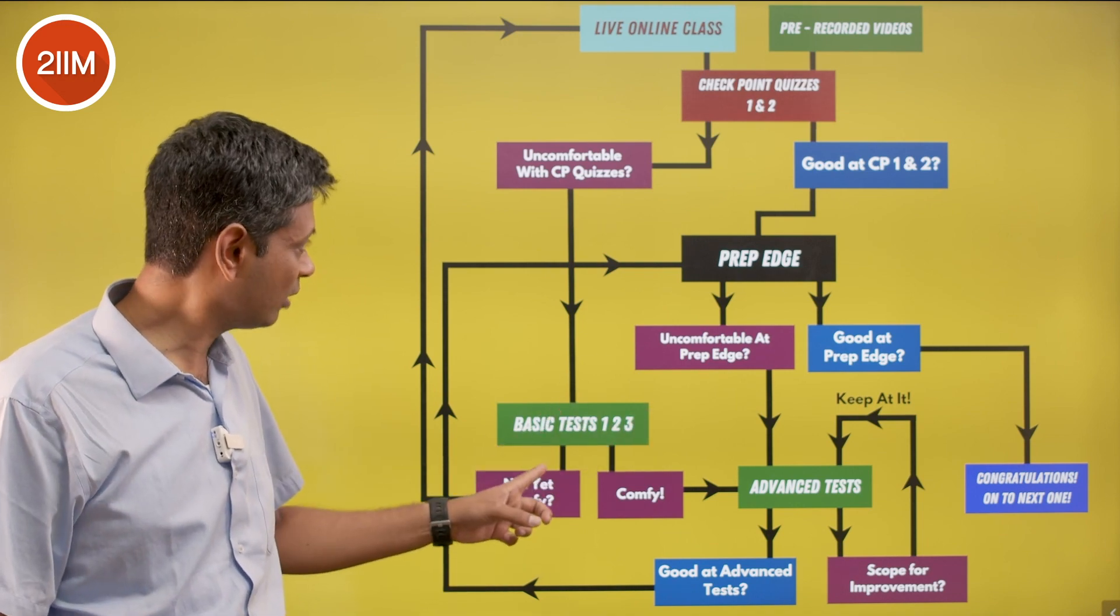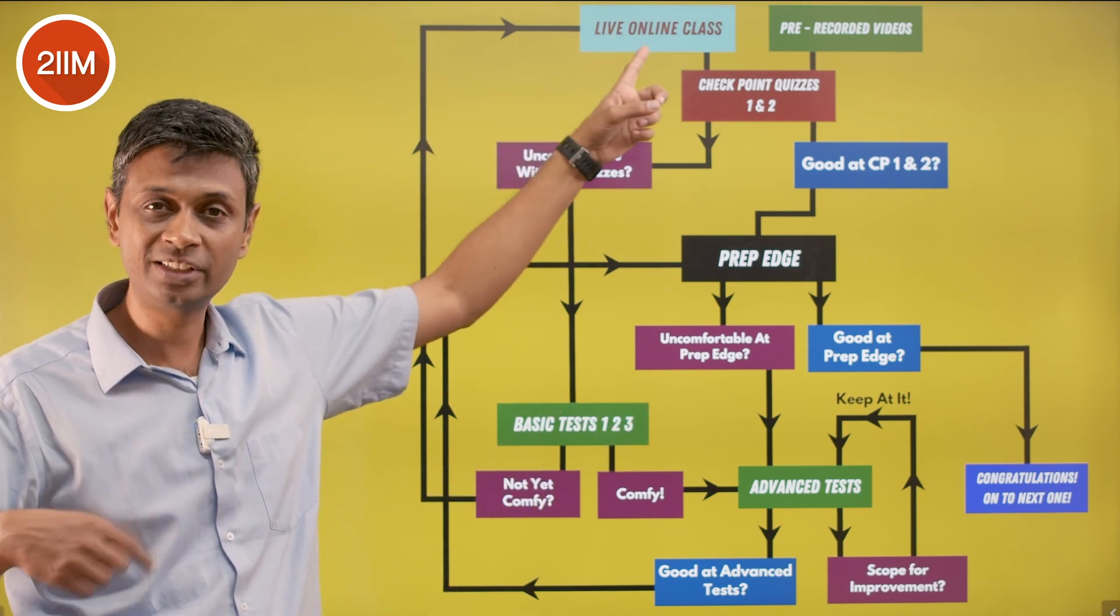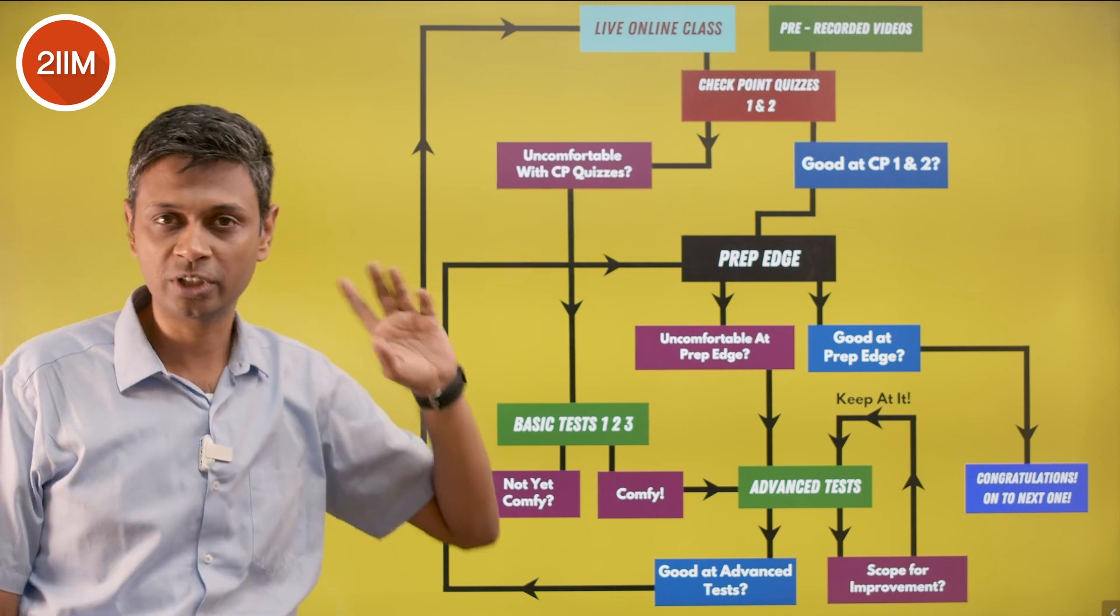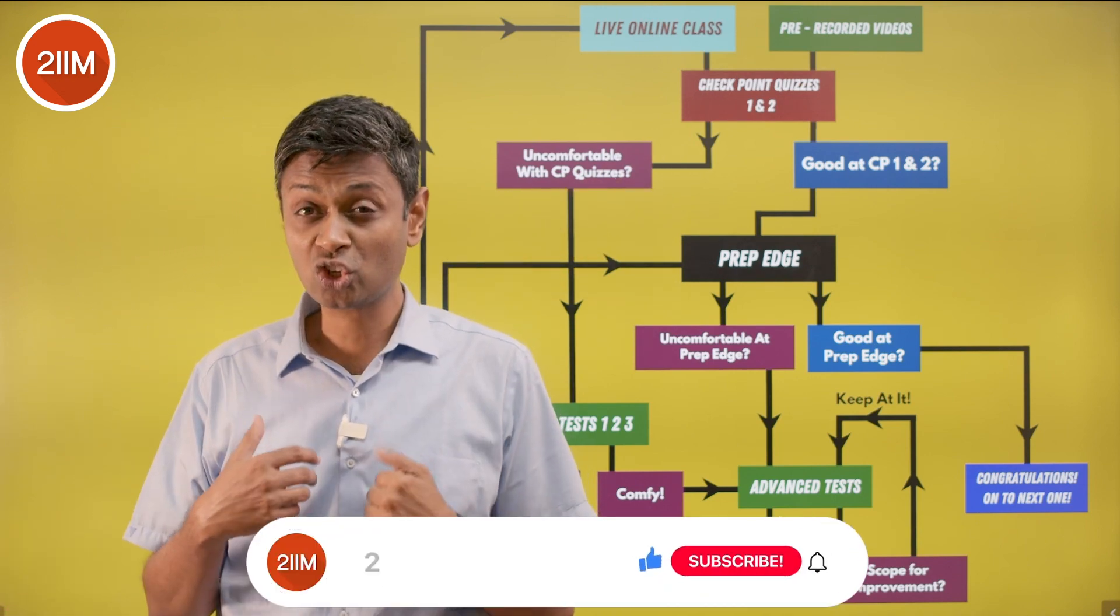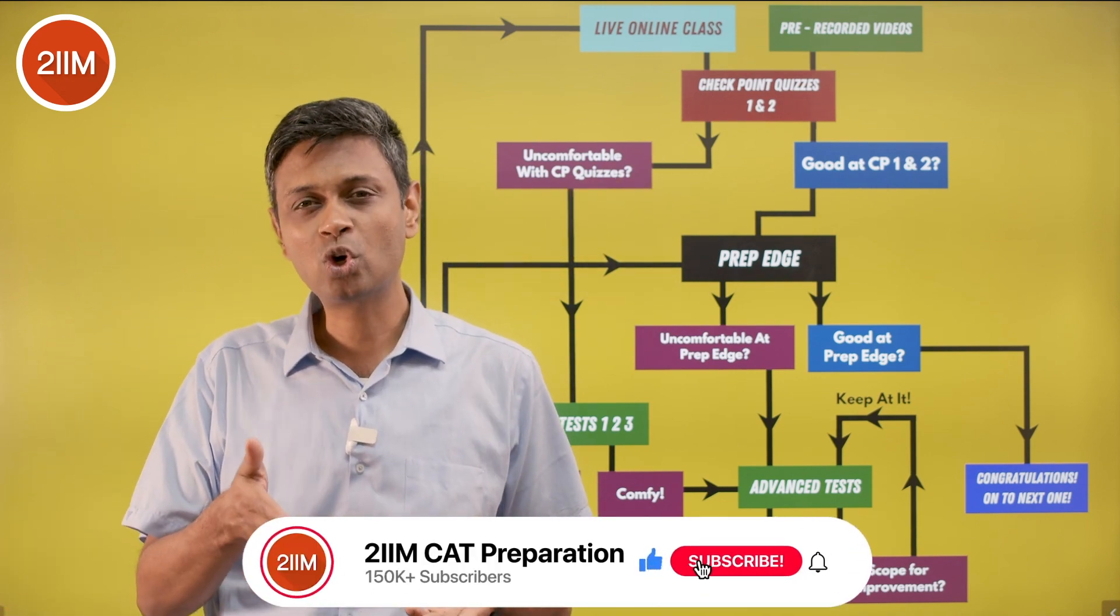You go into basic test one, two, three - you're comfortable, then move to advanced test. If you're not yet comfortable, go back to the live online class, see the recording, and then come back on the same journey. If you're not consolidated on an idea, then you cannot go on to prep edge.